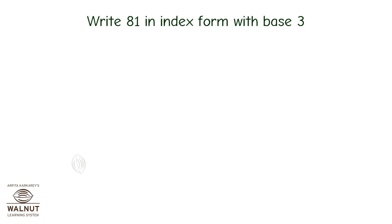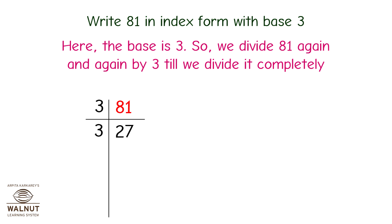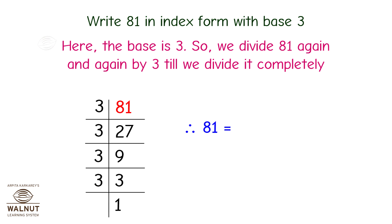Write 81 in index form with base 3. The base is 3, so we divide 81 again and again by 3 until we divide it completely. Therefore, 81 is equal to 3 multiplied by 3 multiplied by 3 multiplied by 3, which is equal to 3 raised to 4.